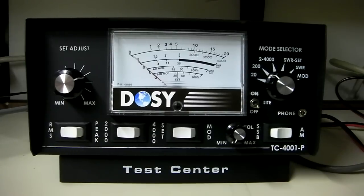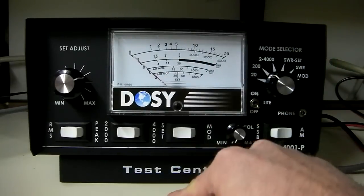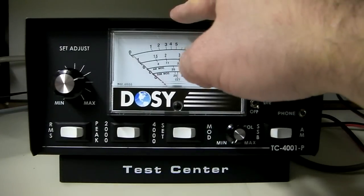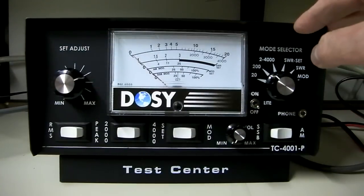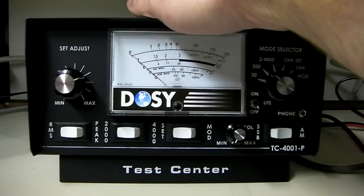This is a SWR meter, a watt meter, and a modulation meter. It's a fairly good size. The meter from bottom to top here is about 6 inches, about 9.5 inches wide and about 5 inches deep.